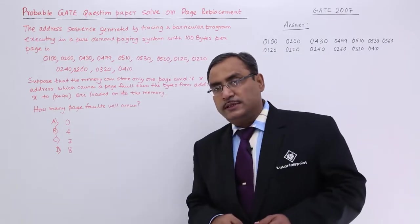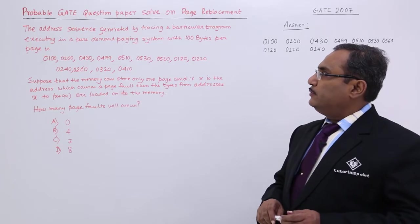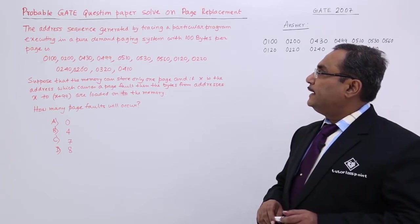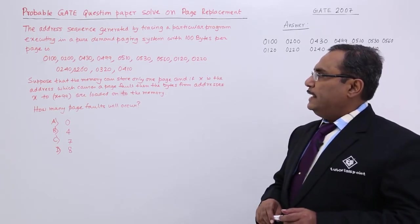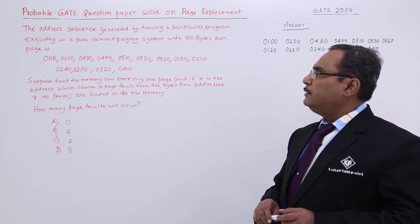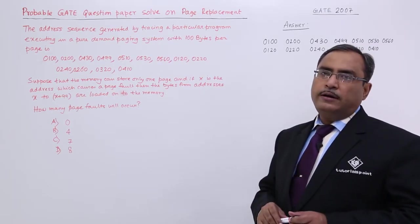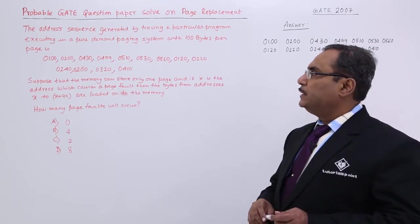Now how to solve this particular question? At first we are reading the question. The address sequence generated by tracing a particular program executed in a pure demand paging system with 100 bytes of page. That means each page can hold 100 bytes of information.